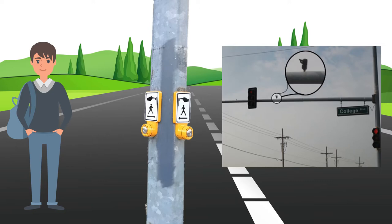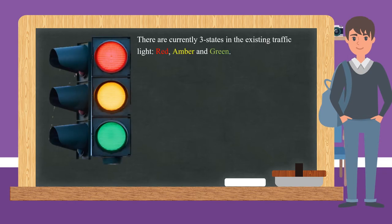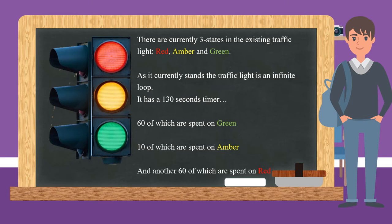First, let us examine how the spotlight works. There are initially 3 states in the spotlight: red, amber, and green. There is a timer of 130 seconds for all colors to flash and they each flash consecutively. 60 seconds are initially attributed to green, 10 to amber, and 60 to red.